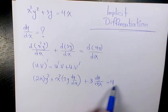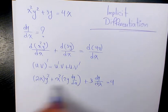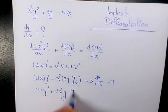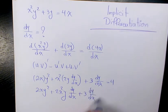So it's going to be 4. Here we need to simplify: 2xy² plus 2x²y dy over dx plus 3 dy over dx equals 4.